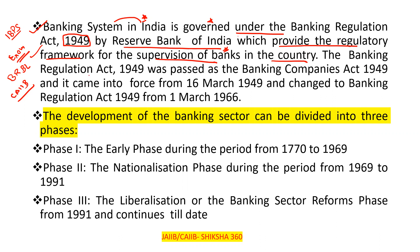The Banking Regulation Act 1949 was originally passed as the Banking Companies Act 1949 and it came into force from 16th of March 1949 — a very important question for the examination. It was later changed to Banking Regulation Act 1949 from March 1, 1966. So earlier it was known as the Banking Companies Act 1949 and later changed to the Banking Regulation Act 1949 from March 1, 1966.